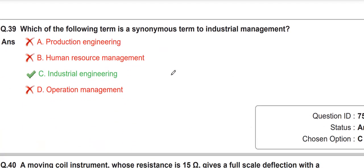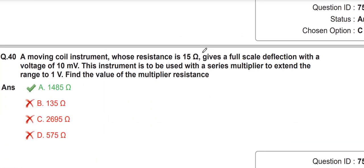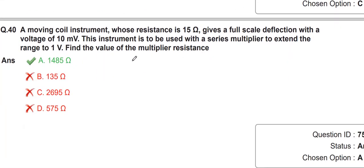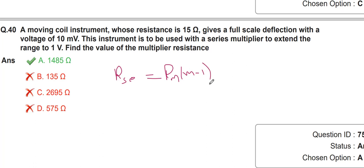This question also repeats from the previous paper. What we have to do: series resistance = Rm × (m − 1), where m is the multiplying factor. We have already discussed this question several times, so just put in the values.